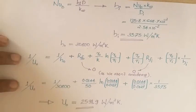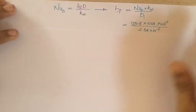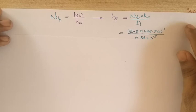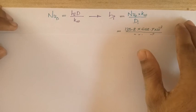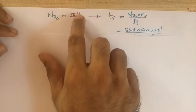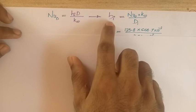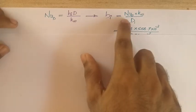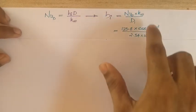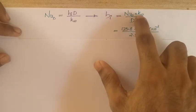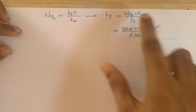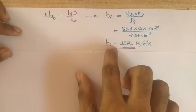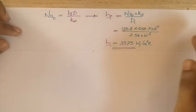Using this Nusselt number we can find the heat transfer coefficient. The Nusselt number is defined as Nu = H × Lc / k, where Lc is the characteristic length. For this pipe, the characteristic length is the diameter. Substituting the Nusselt number and using the thermal conductivity of water — since we are dealing with convection between the fluid and the pipe, not the pipe material's conductivity — we obtain the inner heat transfer coefficient HI = 3575 W/m²K.